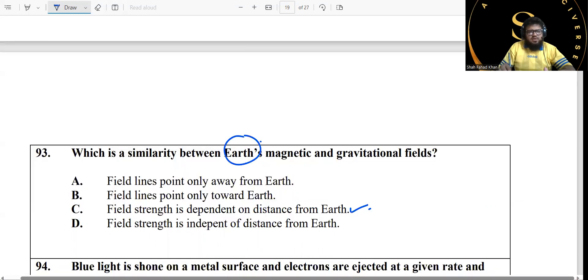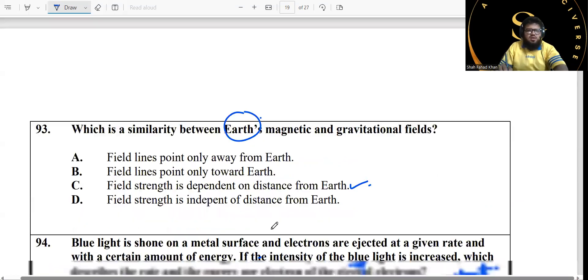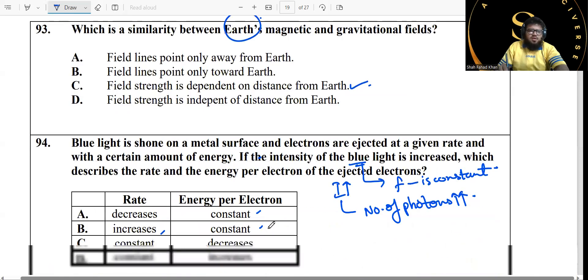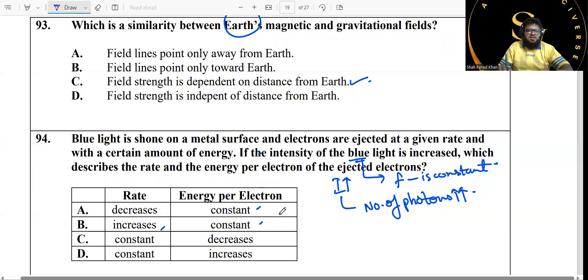93 is C. Moving on, anti-forward. Now blue light is shown on a metal surface and electrons are ejected at a given rate with a certain amount of energy. Now we've been told that it's blue light, so it will have a frequency of blue light. Now we are just increasing the intensity.